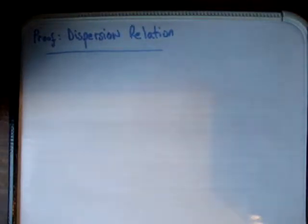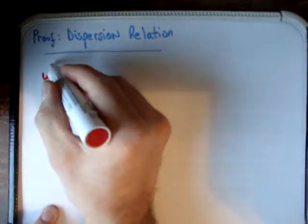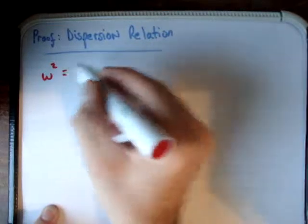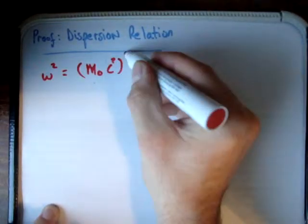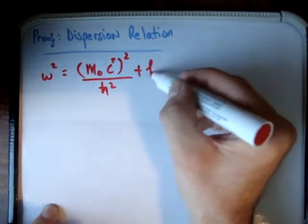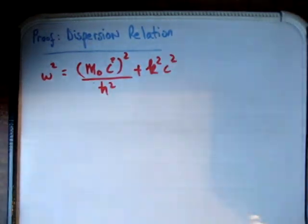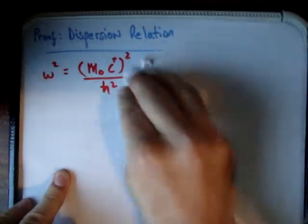In this video I'd like to show proof of the dispersion relation. I'm just going to write the dispersion relation first to make sure you're in the right place. Omega squared is equal to m₀c² squared over h-bar squared plus k squared c squared. This is the sort of thing used in quantum physics and a bit of relativity, and definitely to do with the interaction of waves and light with matter.